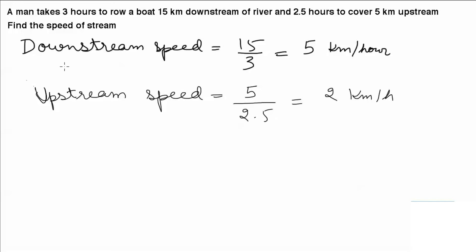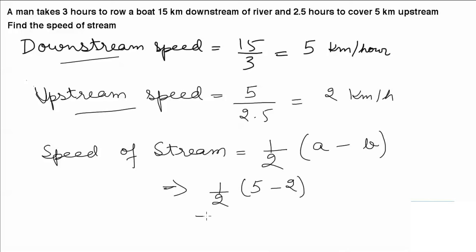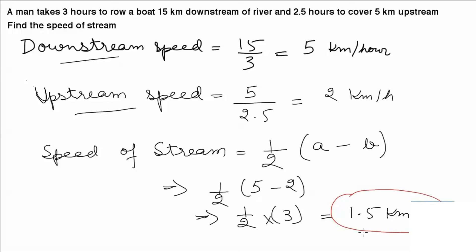Now we need to find the speed of stream. The formula to find the speed of stream when downstream and upstream speeds are given is: speed of stream equals half of (downstream speed minus upstream speed). So that is half of (5 minus 2), which is half multiplied by 3, giving 1.5 km per hour. So the speed of stream is 1.5 km per hour.